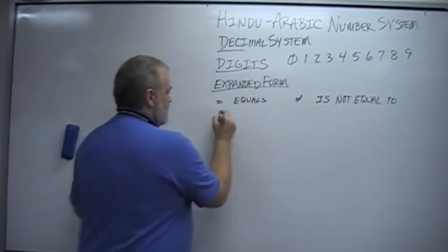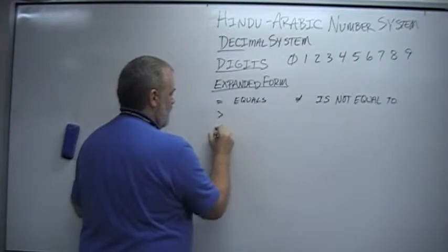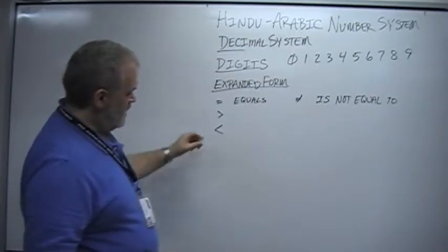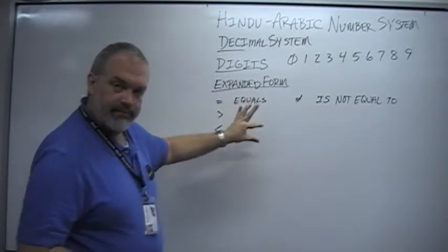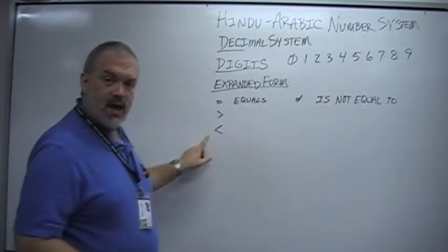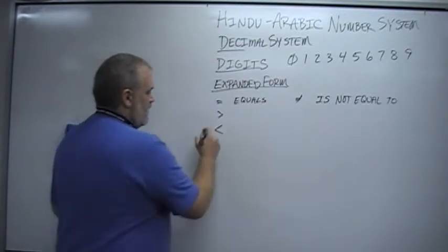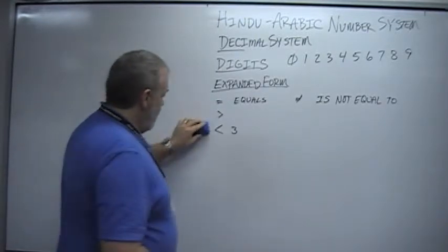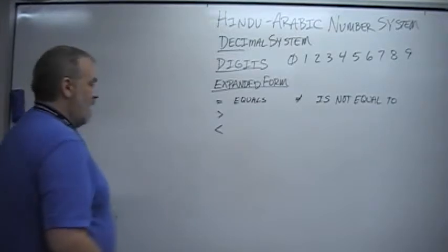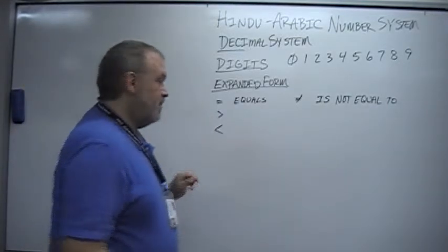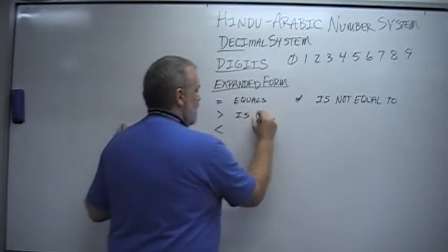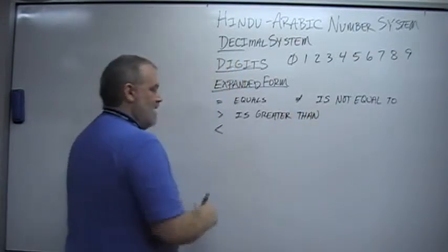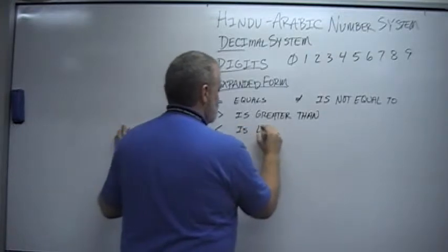Now, you've also probably seen these symbols before. There are a lot of different ways that people remember these. One method is the crocodile method, which says that our crocodile eats the bigger number. The way I prefer it is the bigger side of the sign points to the bigger number. The formal way to talk about these is, this is 'is greater than,' and this one is 'is less than.'